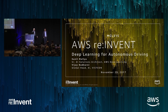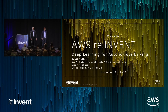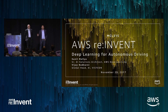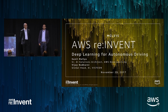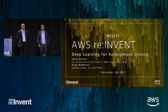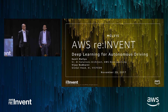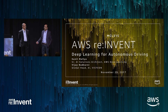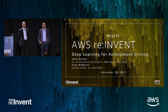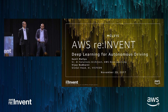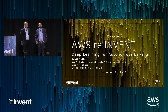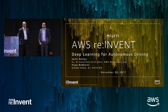Good evening everybody. Thanks for coming this late. I'm Sunil, a solutions architect with the deep learning team at AWS, and I have Vijay here, who is the global head of AI at Visteon. We're going to be talking about deep learning for autonomous driving.